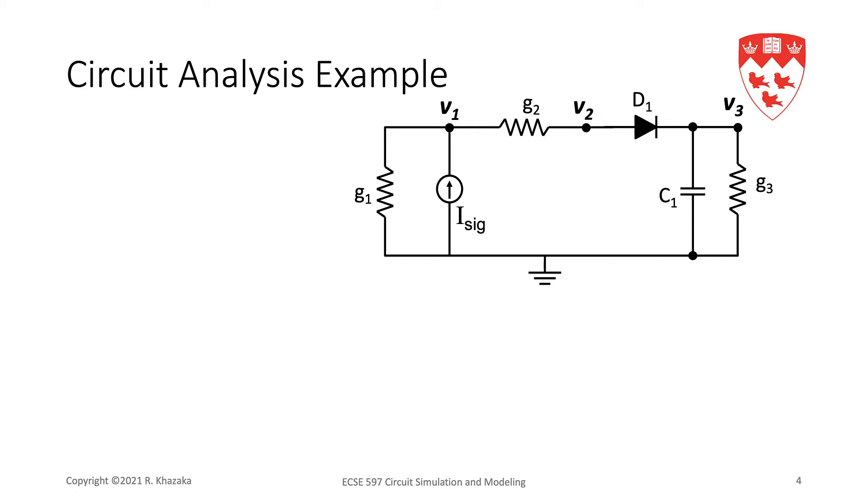KCL at node 1: we sum all the currents leaving node 1. The current in resistor G1 is G1*V1. The current leaving through resistor G2 is G2*(V1 - V2). That's equal to the currents entering ISIG through the independent source.